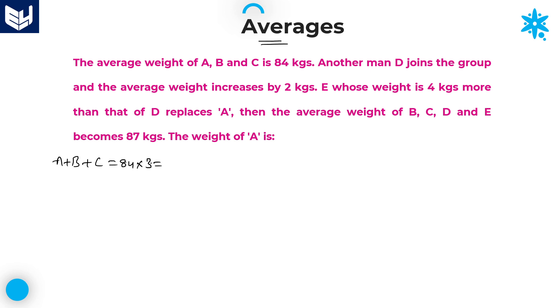84 into 3 which is equal to 252. So A plus B plus C is equal to 252.